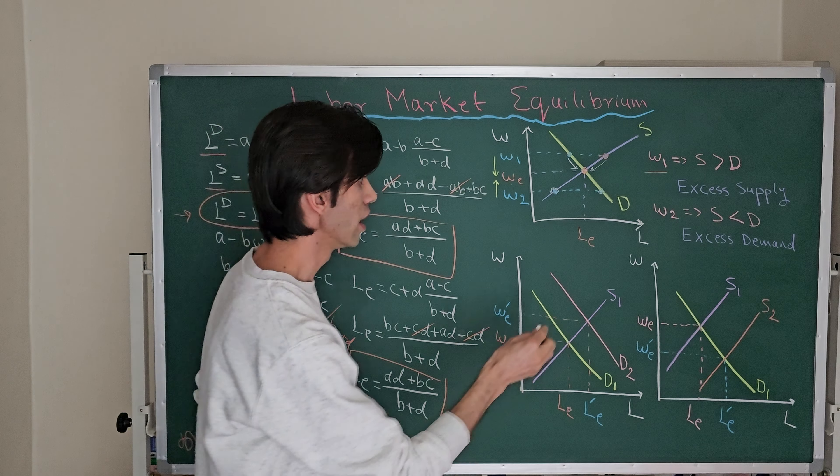Despite the lower wage, the quantity of labor hired in the market increases. So higher supply decreases the market clearing wage but increases employment, while higher demand increases both the market clearing wage and employment. These two cases show how shifts in supply or demand disturb the existing market clearing equilibrium. In the next video, a practical example will illustrate how to find labor market equilibrium more concretely.